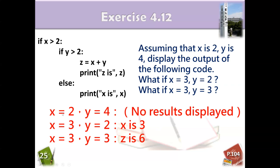So we can see the result. The first situation, x equals 2, y equals 4, no result displayed because there is no else here. And the other one, x equals 3, y equals 2, x is 3 because we move into this part. When x is 3 and y equals 3, the z will be 6 because z is x plus y.